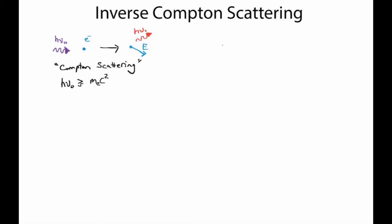Inverse Compton is a way of transferring energy from the electron into a photon. The picture here is we have a lower energy photon that strikes a moving electron, and we end up with an electron that is not moving as quickly but our photon has gained some energy. This is the picture of inverse Compton scattering.